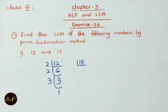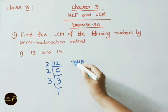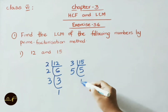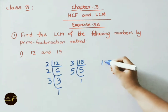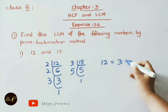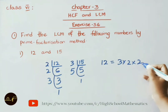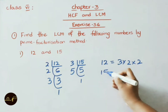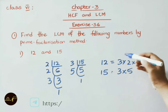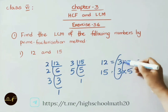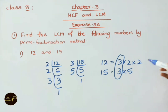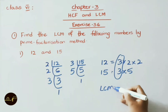Now for 15: 3 times 5 is 15, then 5 times 1 is 5. So prime factors for 12 equals 3 × 2 × 2. Prime factors for 15 equals 3 × 5. Now let us see the common prime factor, that is 3, and see the remaining factors.